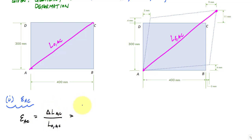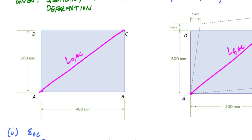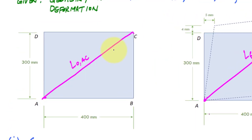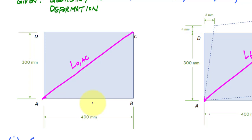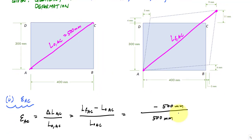We define this as the final length of AC minus the original length of AC, divided by the original length of AC. Looking at the geometry, I can see a 3-4-5 triangle, so the original length of AC is 500 millimeters.